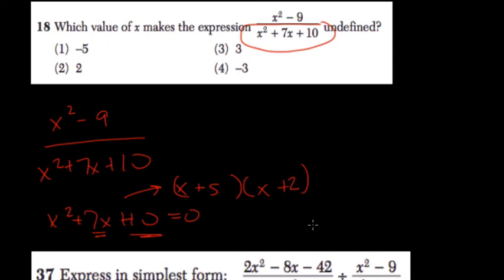So what does that mean? Well, here, if x was equal to negative 5, or if x was equal to negative 2, we would get 0.